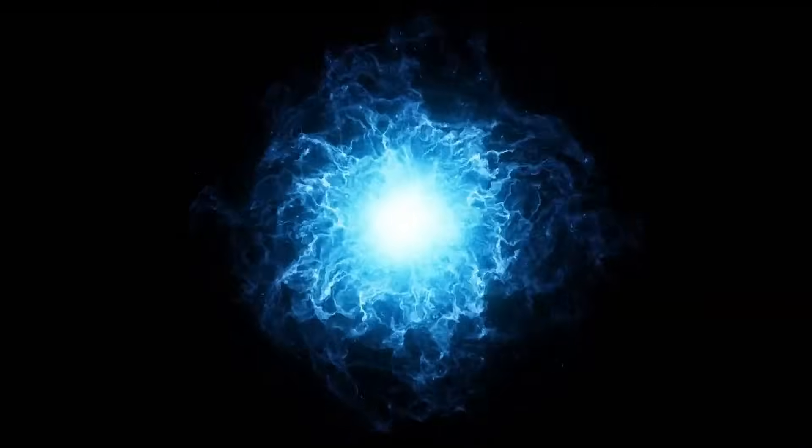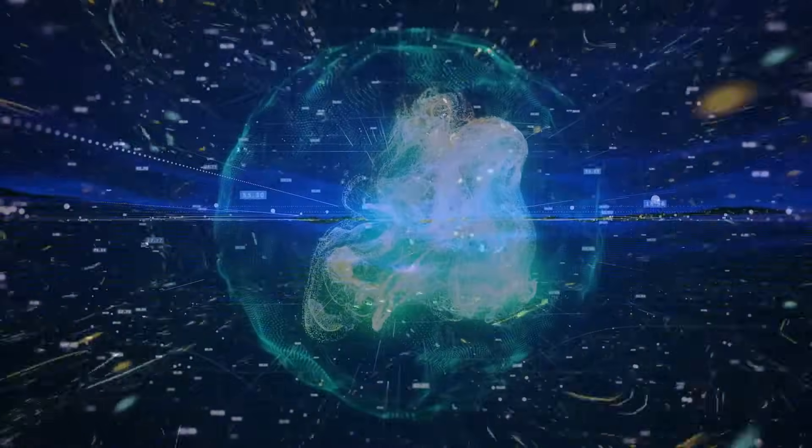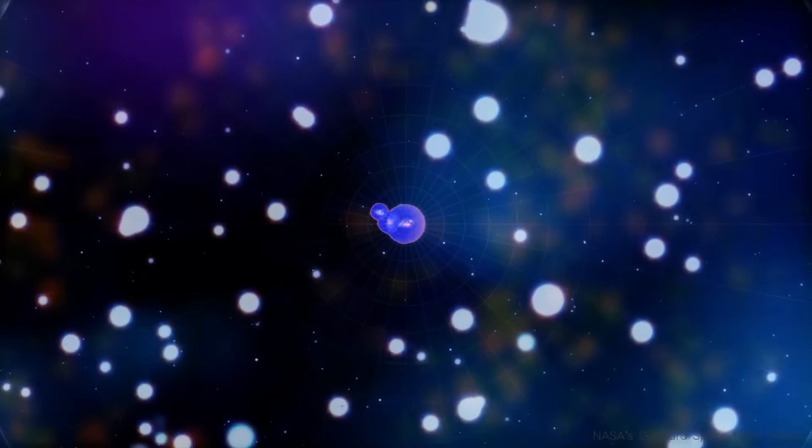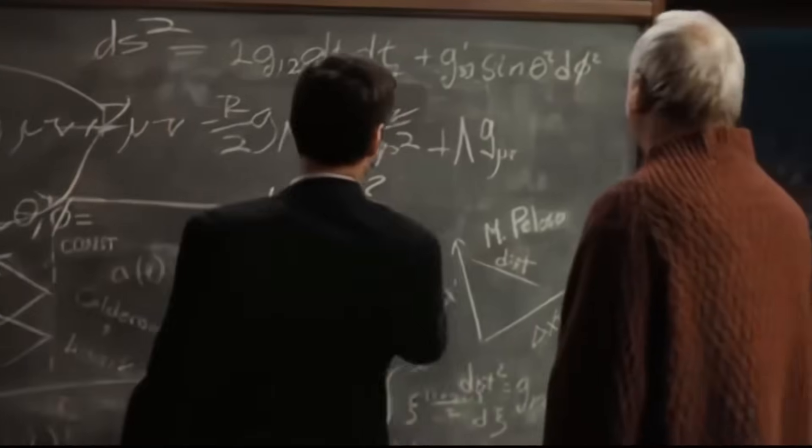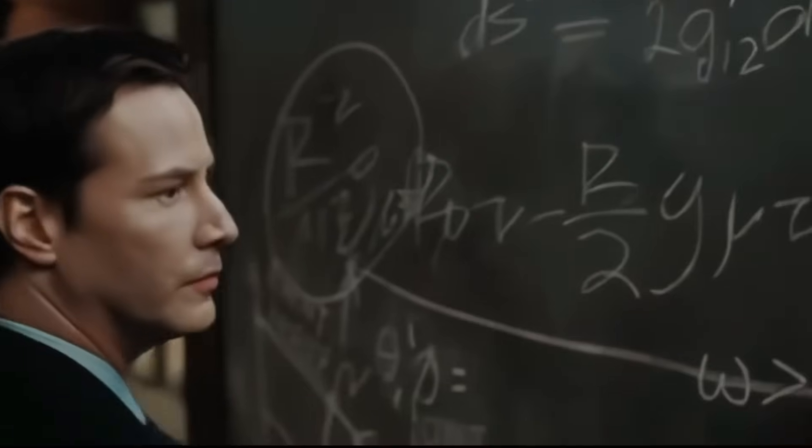Some versions of the theory even suggest that adjacent universes could exert a slight gravitational tug on each other. If Kaku is right, then the Hubble tension might not be a problem with our measurements. It might be the first observational proof that we are part of a much larger cosmic landscape. But before we jump to conclusions, let's see how the scientific community is reacting to this theory.